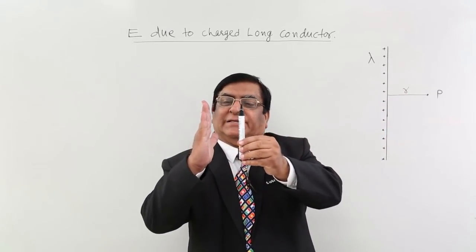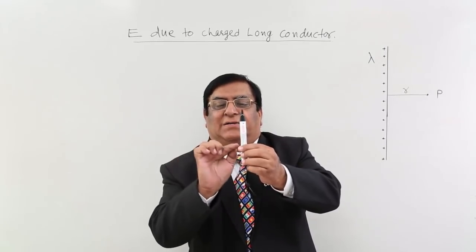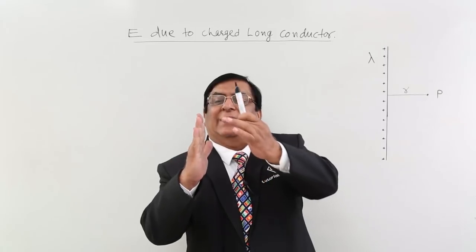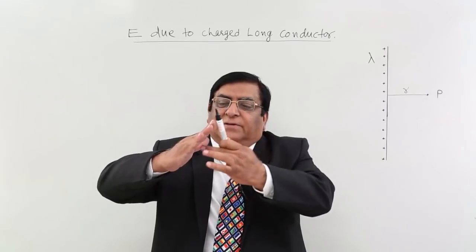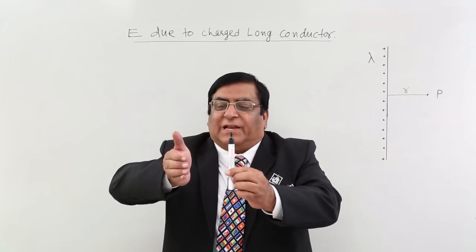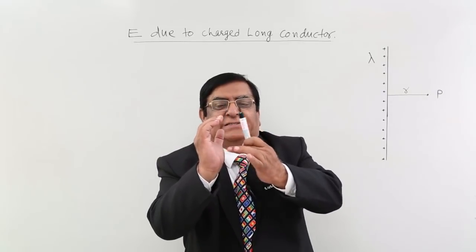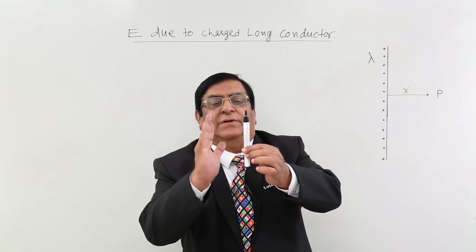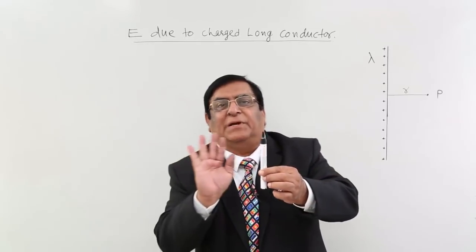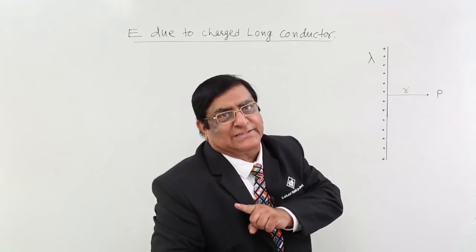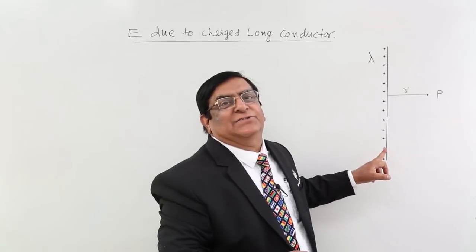The answer is: if I wrap the conductor with a cylinder. If I take a curved surface around it, then all points on that surface are at the same fixed distance R, and at every point the electric field will be the same. A cylinder is the best symmetrical surface for a straight or linear charge distribution.